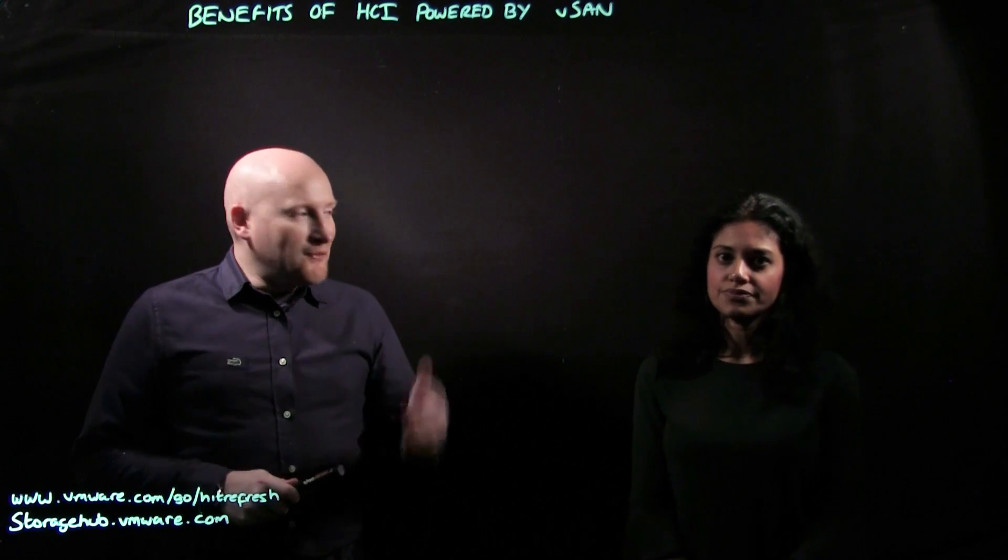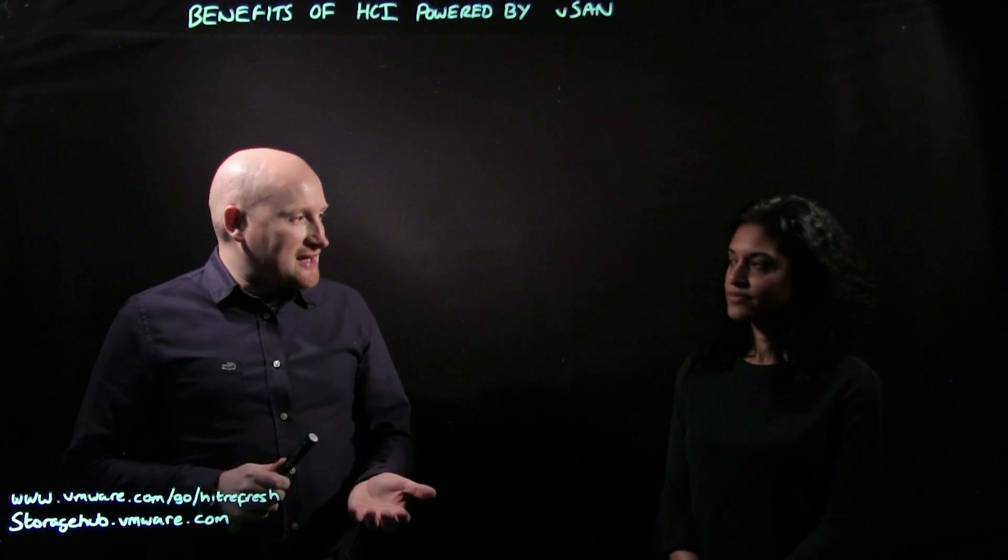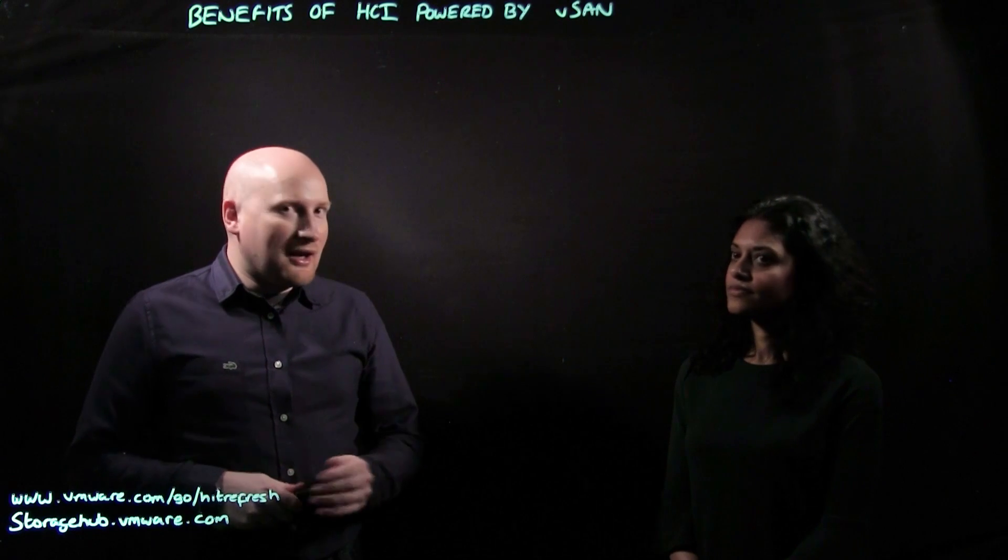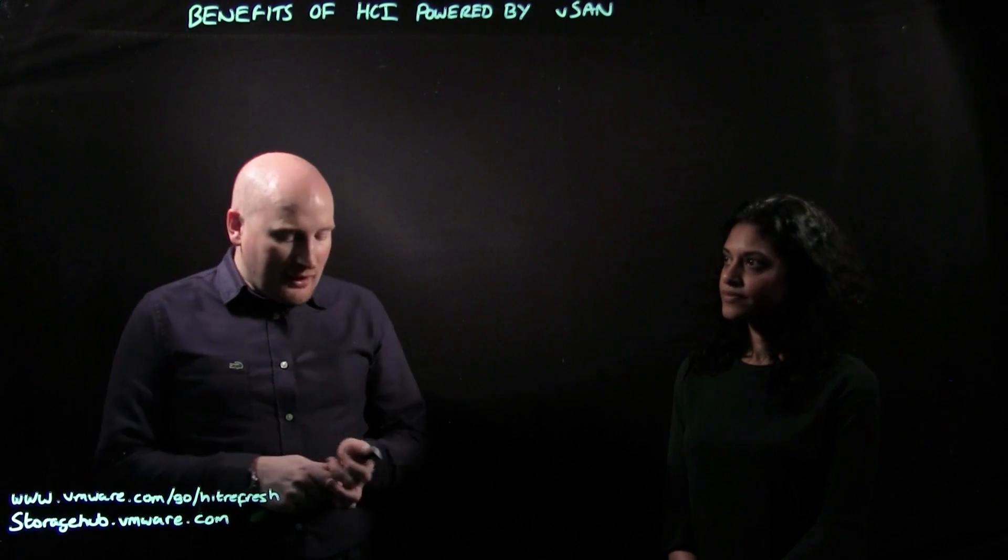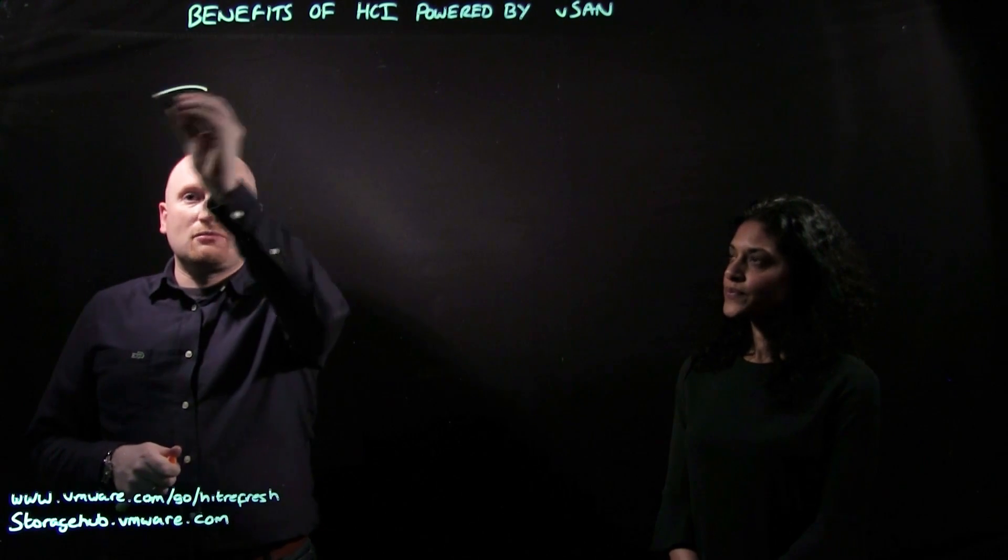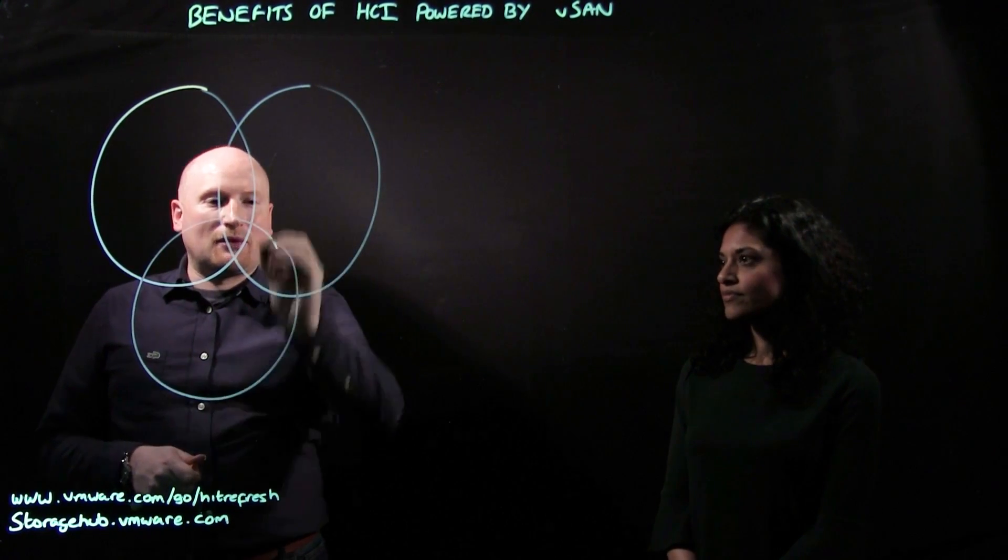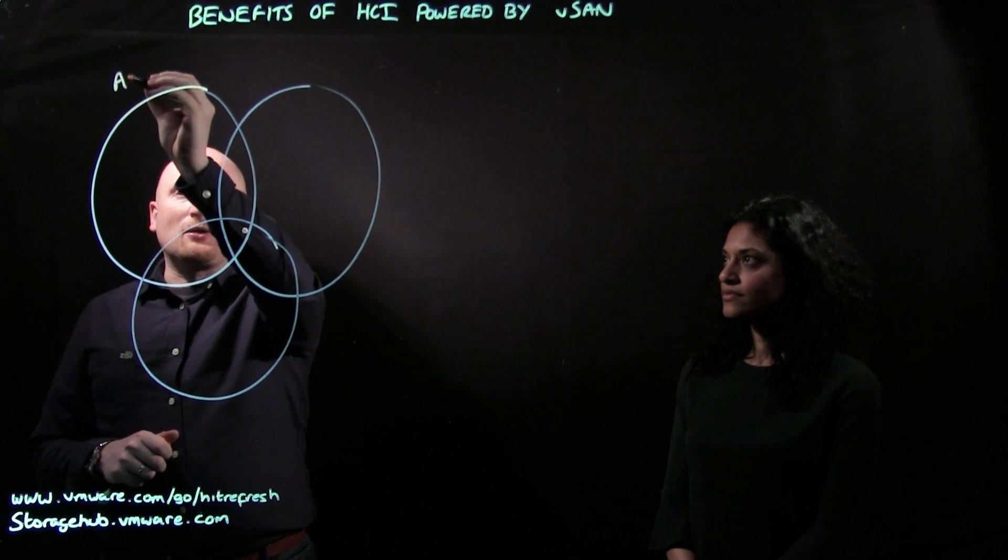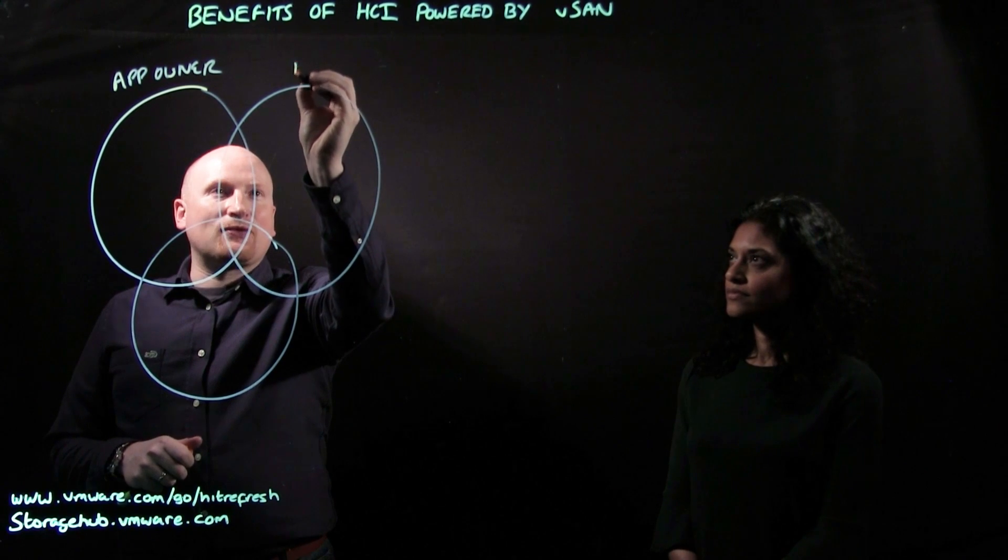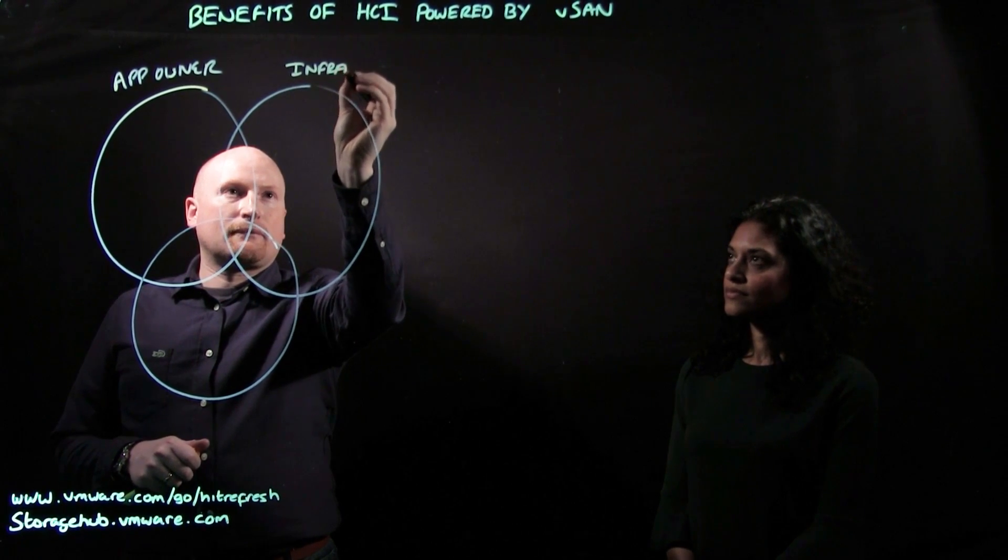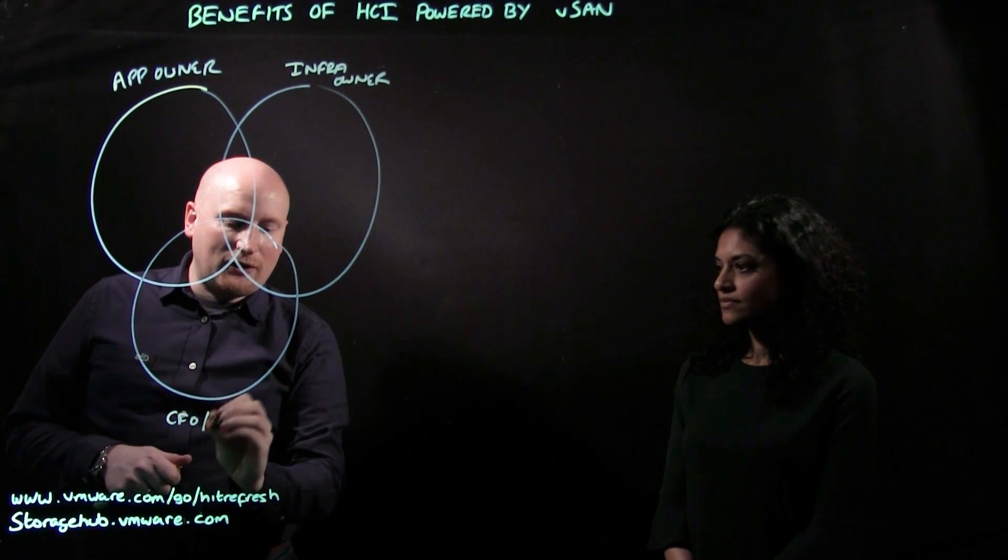Thank you, Sarah. So before we do that, let's take a little bit of a step back. I see a lot of customers and meet various teams within those organizations, and usually what you find is you have different requirements from different teams with regards to an infrastructure. So I'm just going to draw three circles. Each circle represents each one of these departments. The first circle up here is the application owner, the second circle is the infrastructure owner, and then down at the bottom here we have the chief financial officer or the finance team.